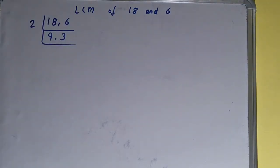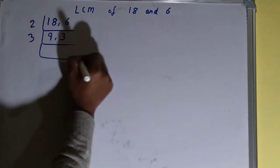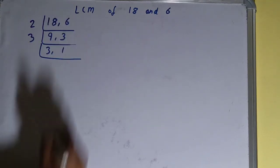So we'll go to the next prime number, that is 3. With 3, both the numbers are divisible, so we'll divide and we'll be having 3 comma 1.